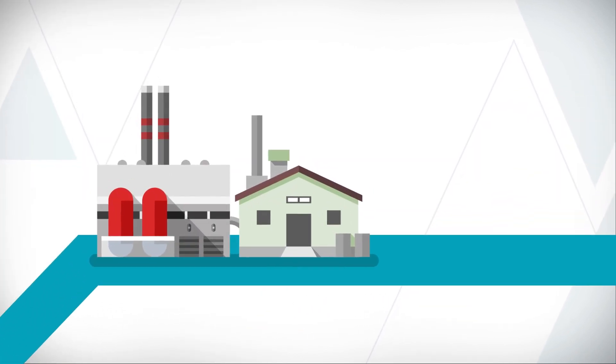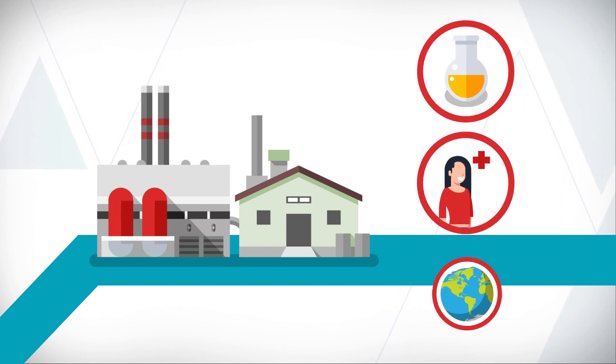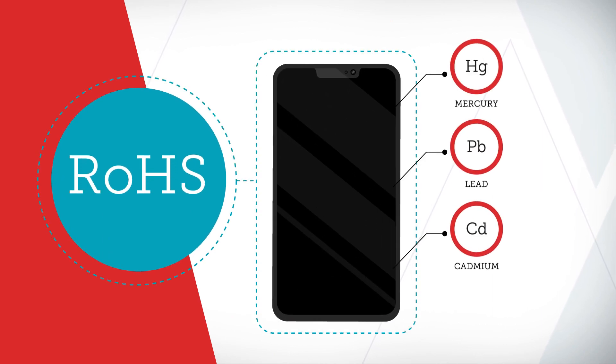The manufacture of these products sometimes involves the use of substances that could harm human health or the environment. RoHS regulates the use of some of these substances.